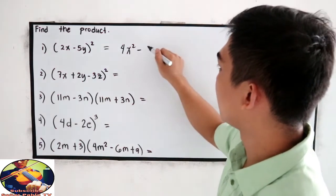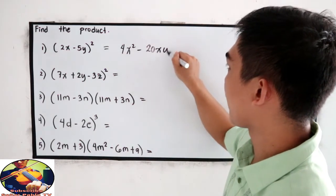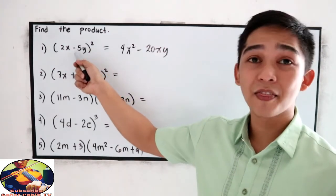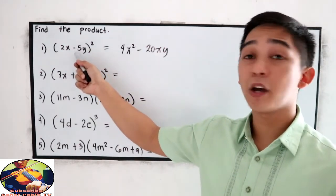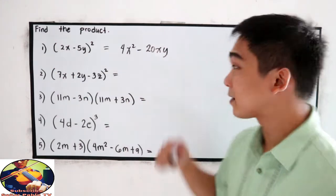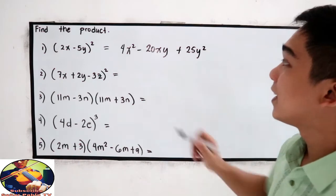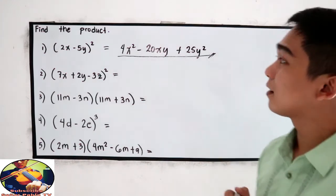So, negative 20xy. And last, square the second term. Negative 5y squared, that is positive 25y squared. This will be the product.